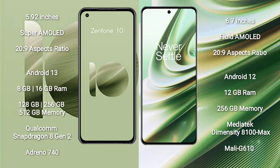The Asus Zenfone 10 runs on the Android 13 operating system. The OnePlus 10R runs on Android 12. The Asus Zenfone 10 comes with 8GB or 16GB RAM and 128GB, 256GB, or 512GB of internal storage.